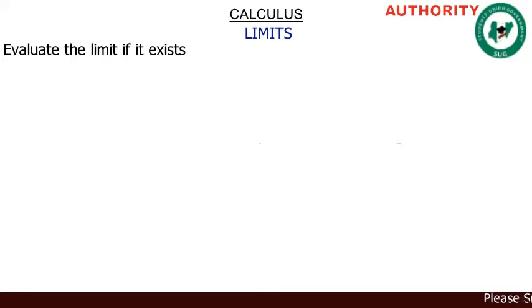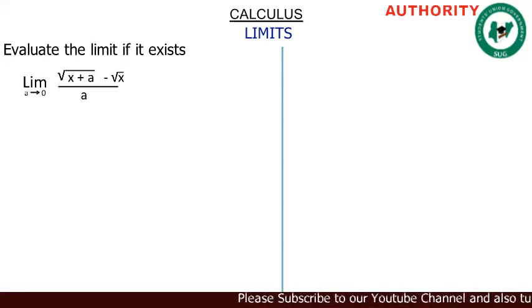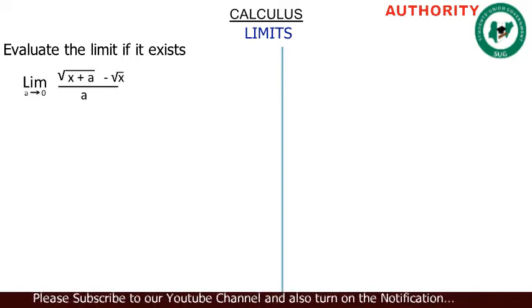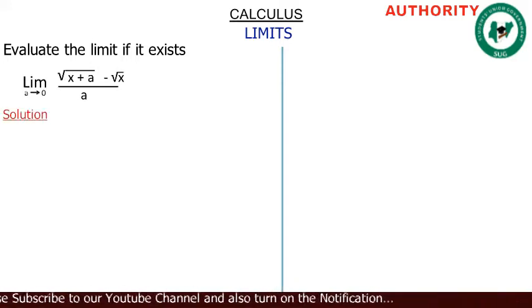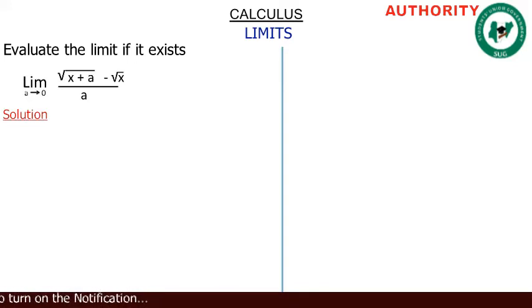Let's look at this problem. We are under calculus, treating limits. The question says: evaluate the limit if it exists — the limit as a approaches zero of the square root of (x plus a) minus the square root of x, all over a. If you plug in zero wherever you see a, you are going to have zero over zero.